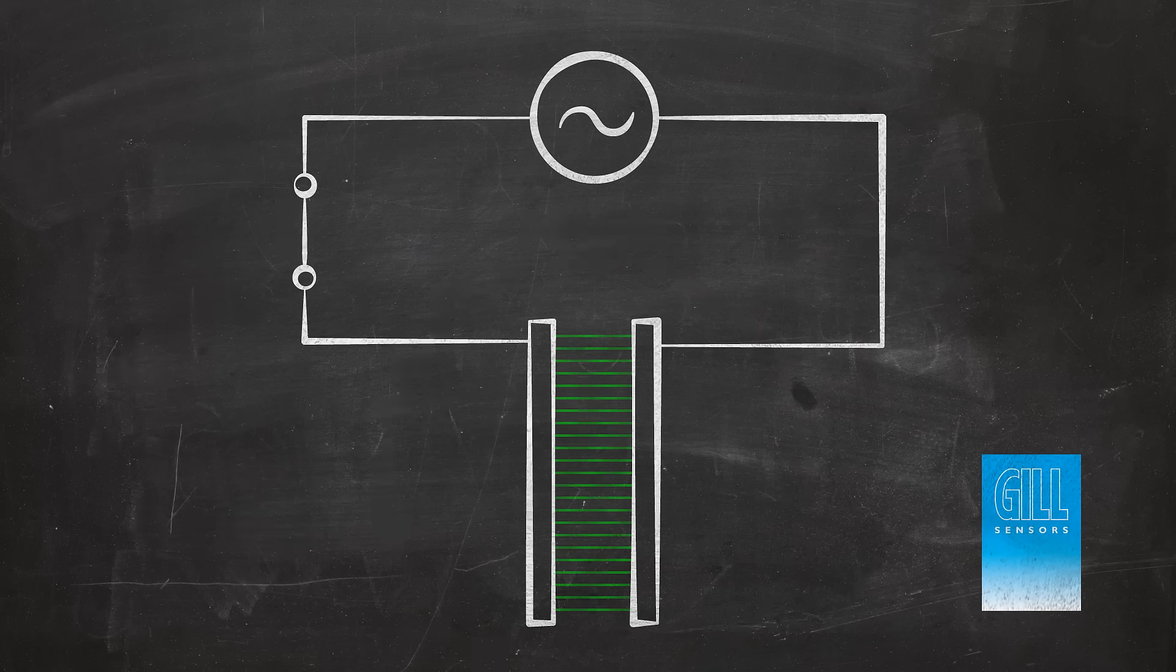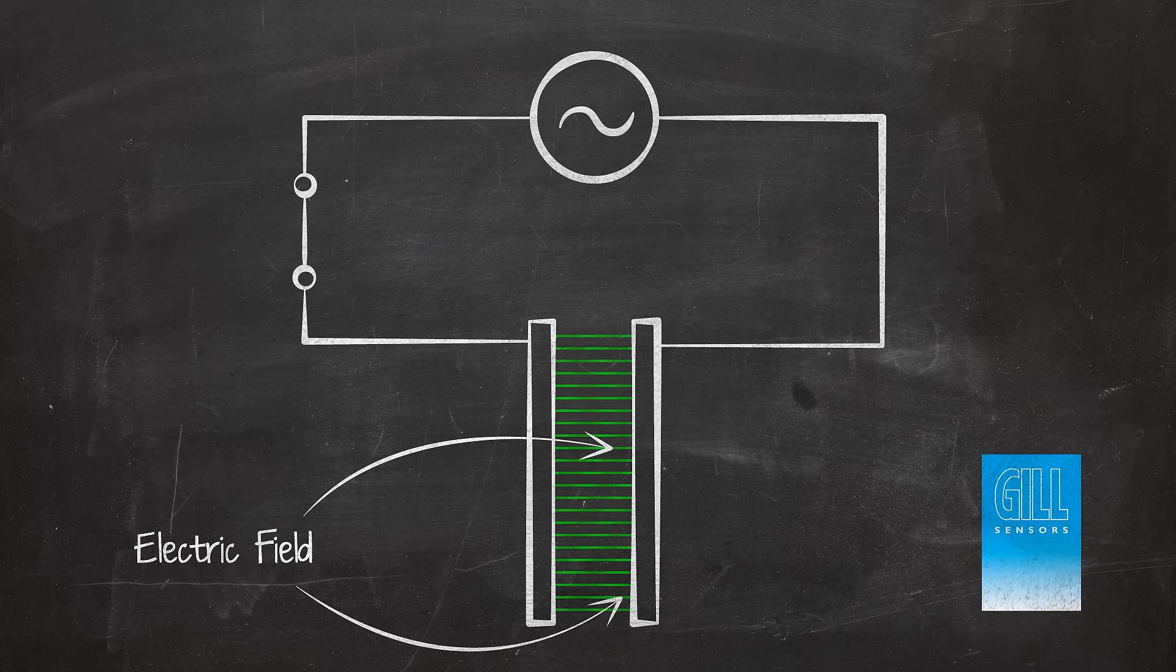Capacitors have the ability to store energy in an electric field between its electrodes, caused when a voltage, or potential, is applied to the circuit. The property of capacitance relates the amount of energy stored in this field to the applied potential.